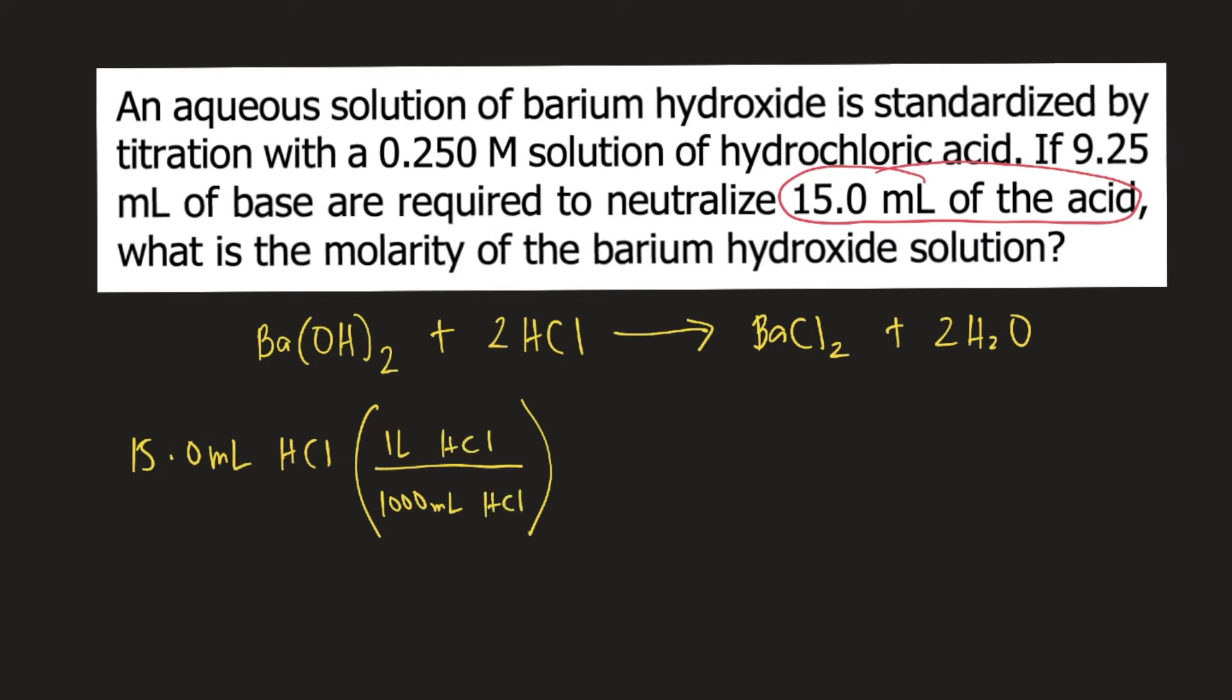So mL of HCl would cancel. Now we have liters of HCl. Then we are given the molarity of the HCl solution, which is 0.250 molar. That means for every 1 liter of the HCl solution, it contains 0.250 moles of HCl.